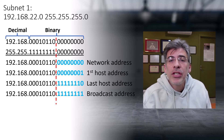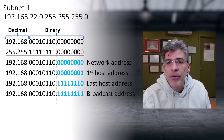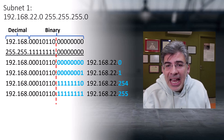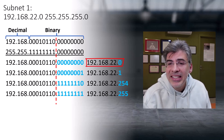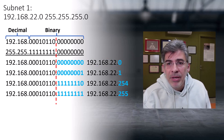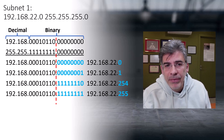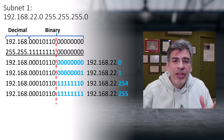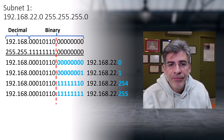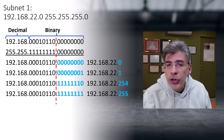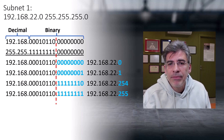We now have all of the important addresses for our first subnet: the network address, the first and last host addresses, and the broadcast address. Written out in dotted decimal format, the network address is exactly the same as the original address we were given — however, it's not actually the same because our subnet mask is different; it's a smaller subnet mask, meaning the resulting subnet is a subset of the original address space.